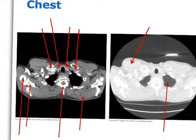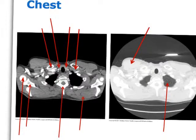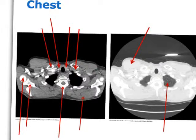Humeral head, scapula, right lung upper lobe, so this is the left lung upper lobe. If you can see this thing right here — the left subclavian artery. This is the vertebra, right subclavian artery.